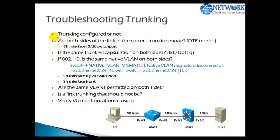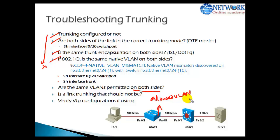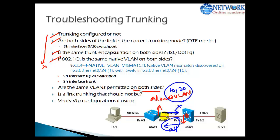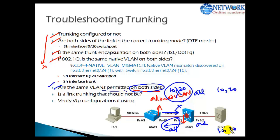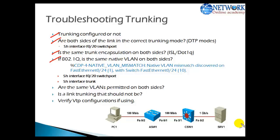Once we confirm those are not the problem, there might be an issue with VLANs permitted on both sides. By default there is an allowed VLAN option on trunk links. If one switch is allowing only VLAN 10 and VLAN 20 while the other side allows all VLANs, that mismatch of allowed VLAN configuration will also affect your trunk link and communication. You must ensure that the permitted VLANs on both sides are the same — either both set to all, or both set to the same list.